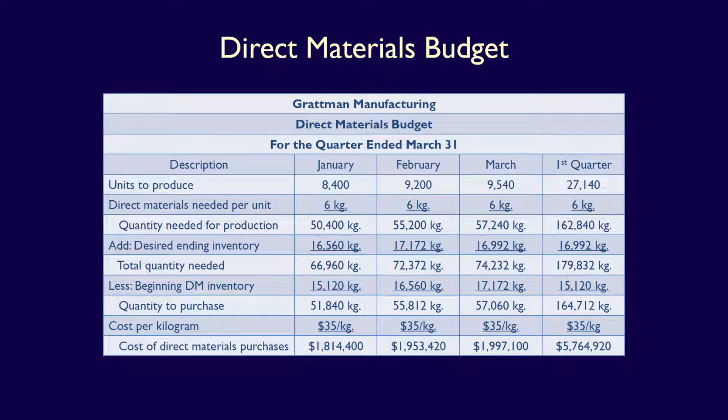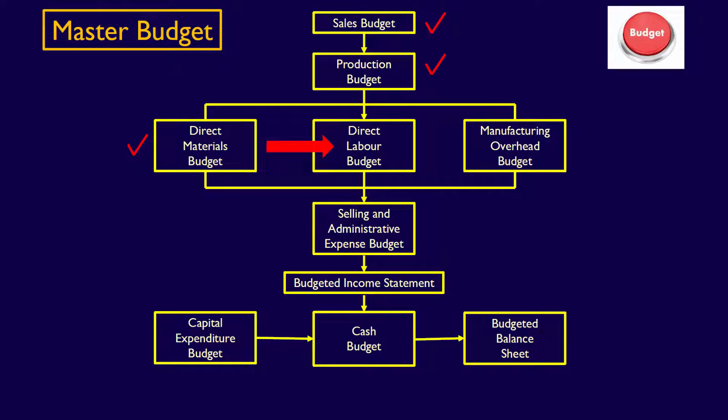The direct materials budget shows not only the amount of direct material units — in this case kilograms — needed to ensure adequate supplies to meet production and safety stock needs, but also how much those purchases will cost. We're now going to produce the next operating budget in the master budgeting process: the direct labour budget.